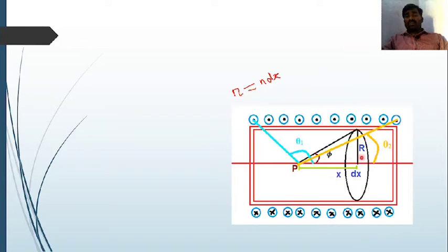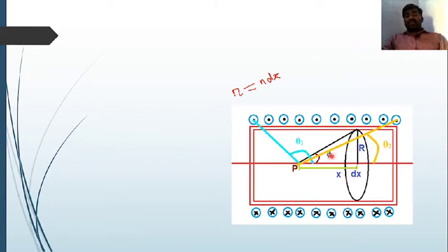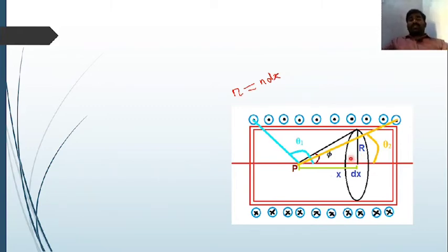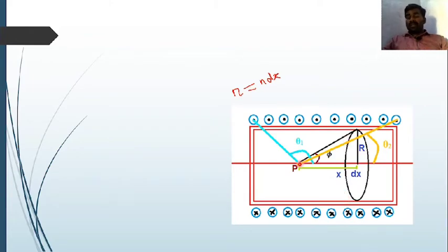Consider a small element of distance dx. From this element, consider a circular coil whose center is at a distance x from a point P on the axis. The radius of the circular coil is r, and the element makes an angle φ with the axis.